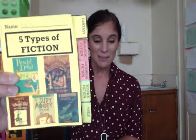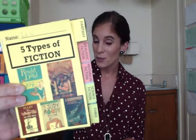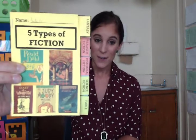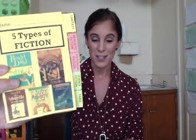This assignment is something that we started in class, and you are expected to finish it for homework. The title is The Five Types of Fiction, and on the side we have fantasy, realistic fiction, historical fiction, science fiction, and fables. This video is going to give you a little bit of insight about what those things are and give you an example of each of them.